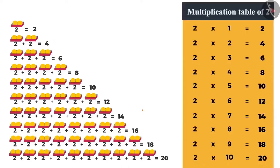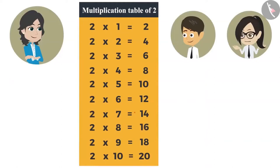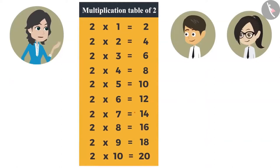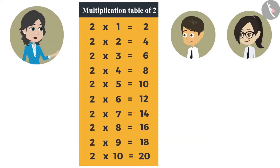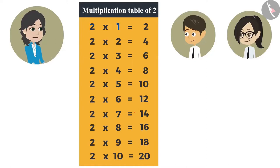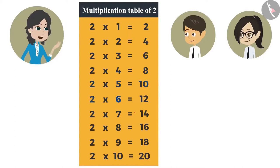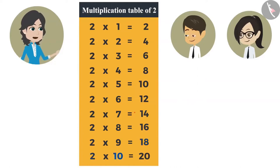What are tables? The list obtained when you multiply a number by 1 to 10 is called the multiplication table of that number. Just like you have multiplied 2 by 1 to 10 and obtained this list — this is the multiplication table of 2. Do we need to memorize it? Yes, because it will be very useful for you. Like me, you too will be able to calculate without using a pen and paper. We had also memorized it, and it is so much fun because you can memorize them in the form of a song. 2 ones are 2, 2 twos are 4, 2 threes are 6, 2 fours are 8, 2 fives are 10, 2 sixes are 12, 2 sevens are 14, 2 eights are 16, 2 nines are 18, 2 tens are 20.